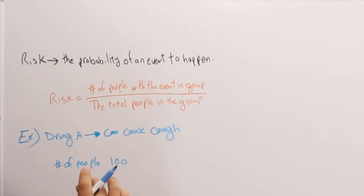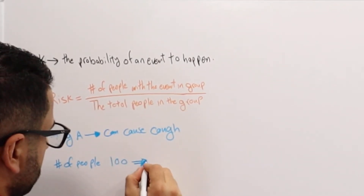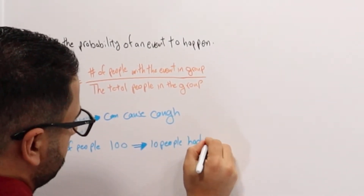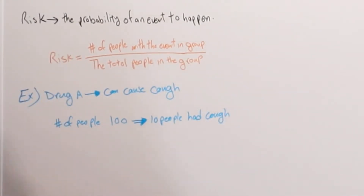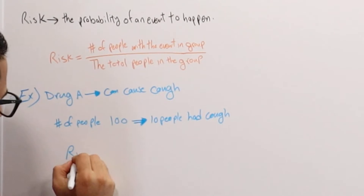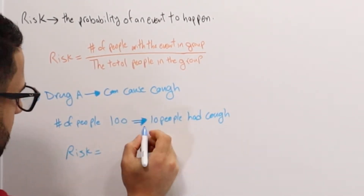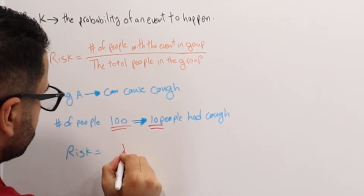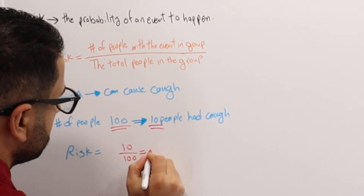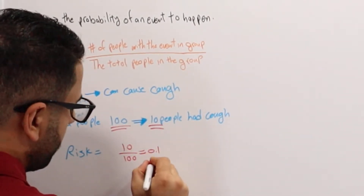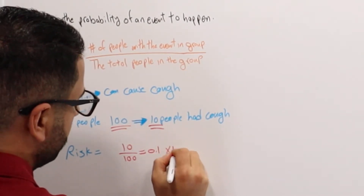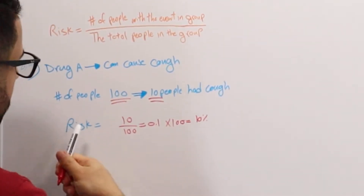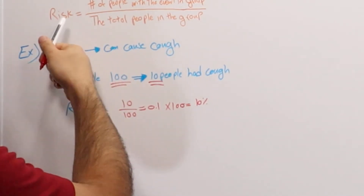So this is the total — 100. And then out of these 100, 10 people had cough. Following the equation, we know that risk in this case would be 10 over 100, which is 0.1. Or if we multiply it by 100, it's going to be 10%. So 10% of the people had the risk of cough.